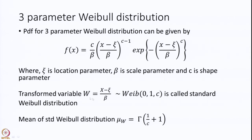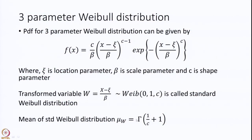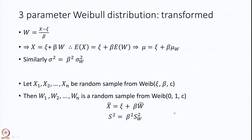This means the transformed variable depends only on one parameter, which is the shape parameter C. This is also called a standard Weibull distribution. Remember: the standard normal distribution does not depend on any parameter, while the standard Weibull distribution depends on one parameter — the shape parameter C. The mean of the standard Weibull distribution, mu sub W, can be given as a gamma function of 1 over C plus 1. Now, if we transform the Weibull variable into W, then x can be written as psi plus beta times W.